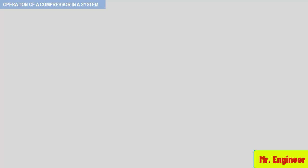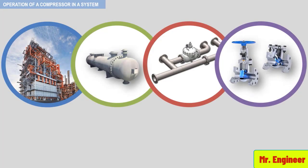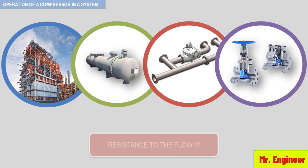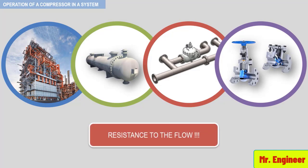A system is a set of connected things or parts that work together. In a typical process, a set of components like vessels, exchangers, furnaces, control valves, and piping work together to produce a resistance to the flow at the centrifugal compressor flanges.